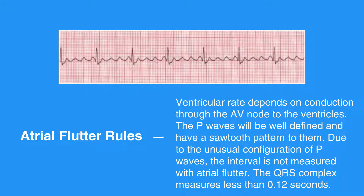The P waves will be well defined and have a sawtooth pattern to them. Due to the unusual configuration of P waves, the PR interval is not measured with atrial flutter. The QRS complex measures less than 0.12 seconds.